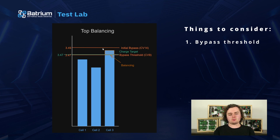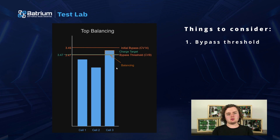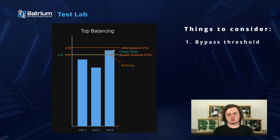Basically, what cb9 does is: any cell that exceeds this threshold needs its charging current bypassed around the cell. We can see that here — this cell is the highest, it's above the threshold, and it's having its charging current bypassed to bring it back down. This balances cells because if one cell has a bit of self-discharge due to a defect or age, it has less capacity, so when it reaches the bypass threshold first, bypassing its current gives the other cells a chance to charge and catch up.